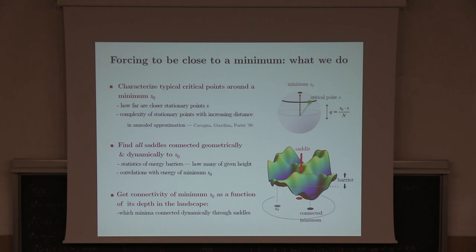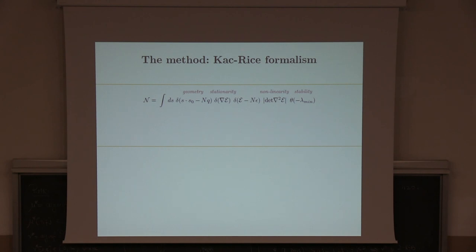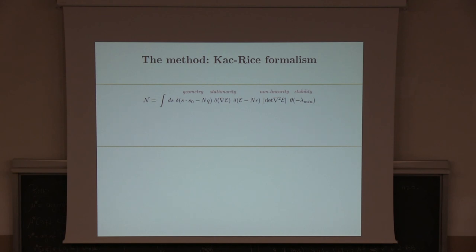The method we use to perform this calculation is based on the Kac-Rice formula. The confusion is: the number of saddles below the threshold is exponentially smaller than the number of minima. So most stationary points in that energy regime are minima. If you do the calculation without specifying the overlap, what you count are saddles which will be orthogonal to any minimum you pick, because the sphere is very high-dimensional and all configuration space is essentially orthogonal to any fixed direction. So you then have to do a large deviation in this overlap and ask whether there is a sub-leading number of saddles at finite overlap with the minimum.